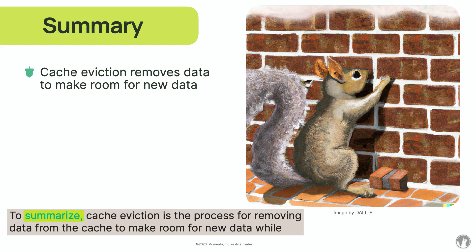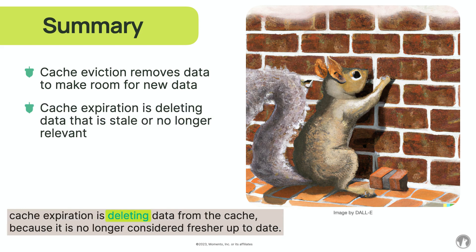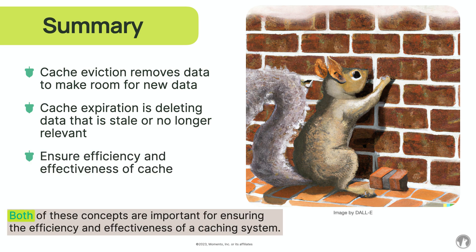To summarize, cache eviction is the process for removing data from the cache to make room for new data, while cache expiration is deleting data from the cache because it is no longer considered fresh or up to date. Both of these concepts are important for ensuring the efficiency and effectiveness of a caching system.